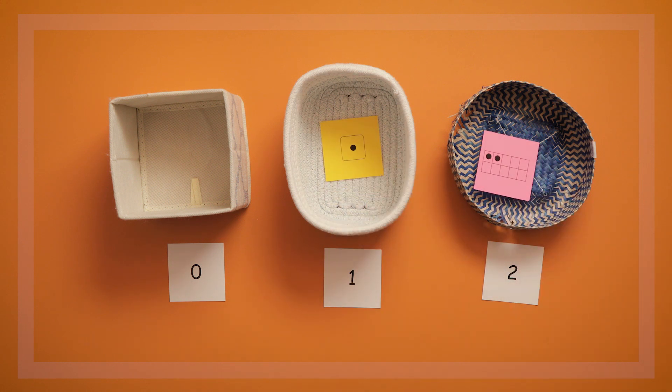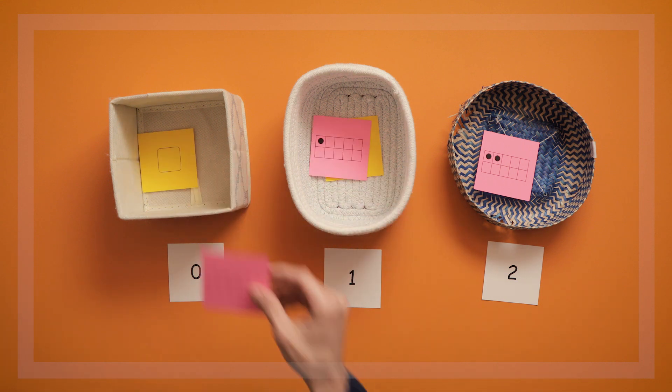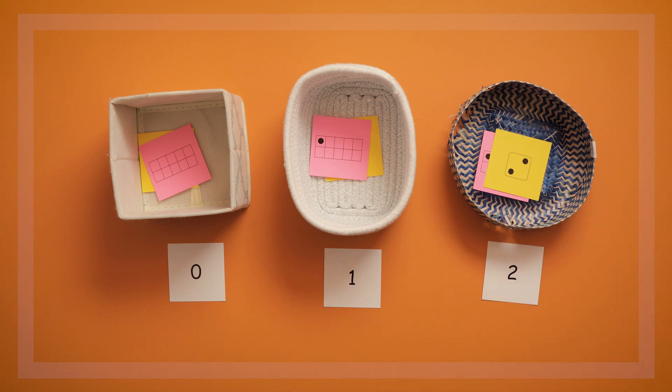In the classroom, you can even use Hungry Numbers as a transition activity. You can give each child one dot card and have them feed it to its matching numeral card before leaving the circle or table.